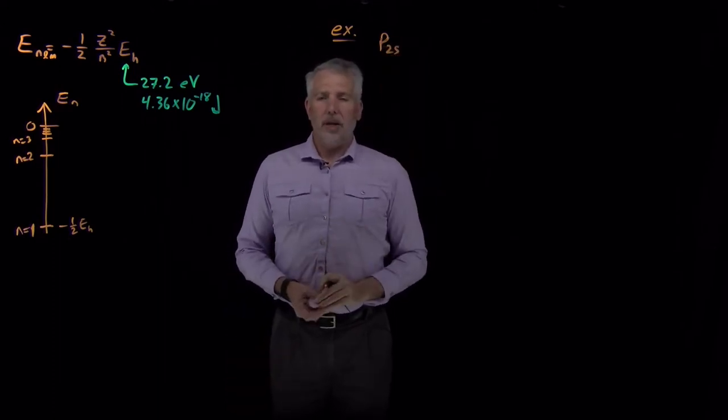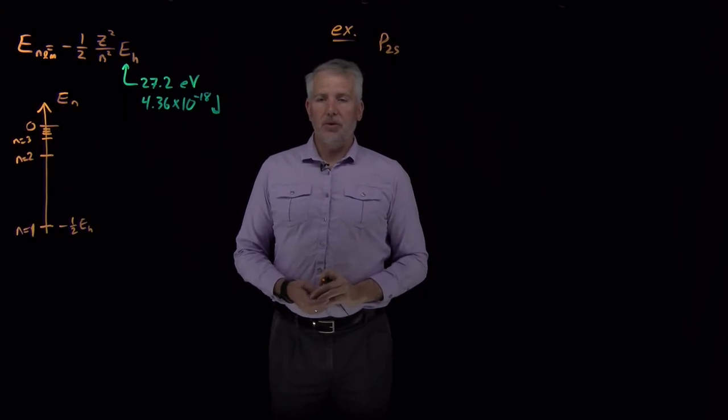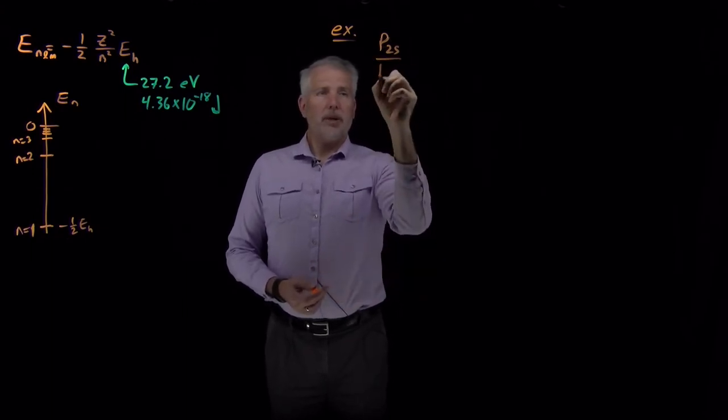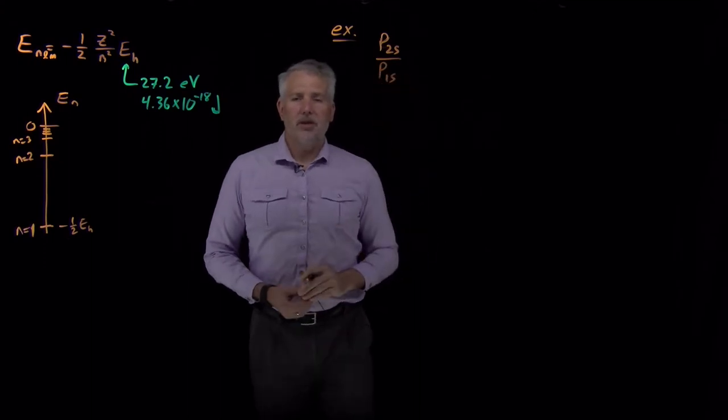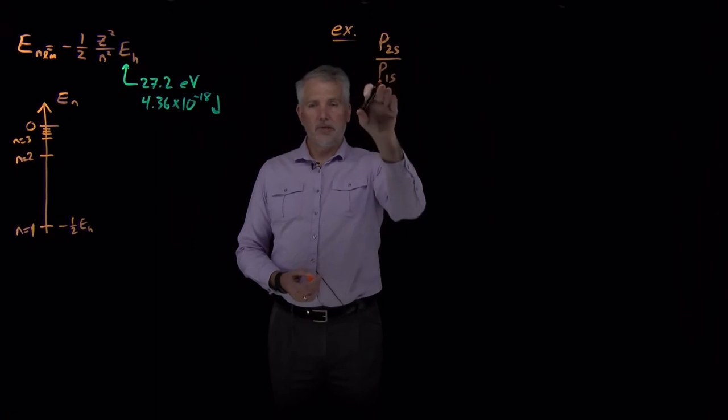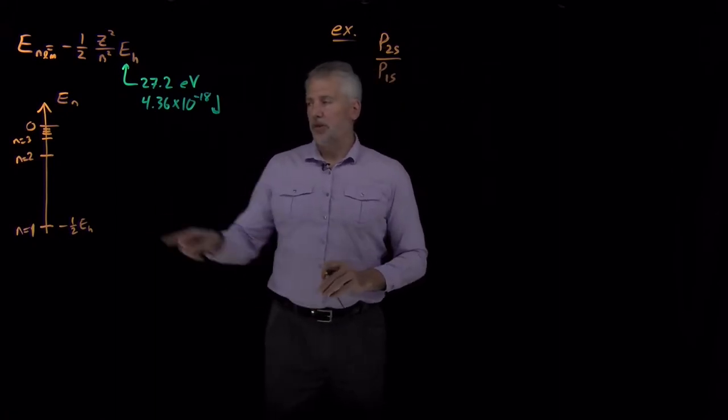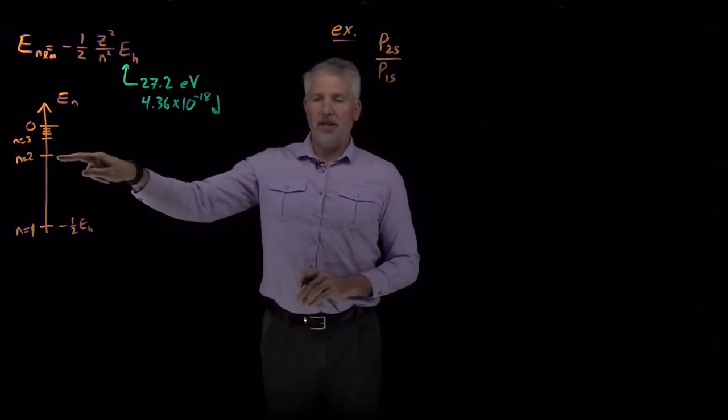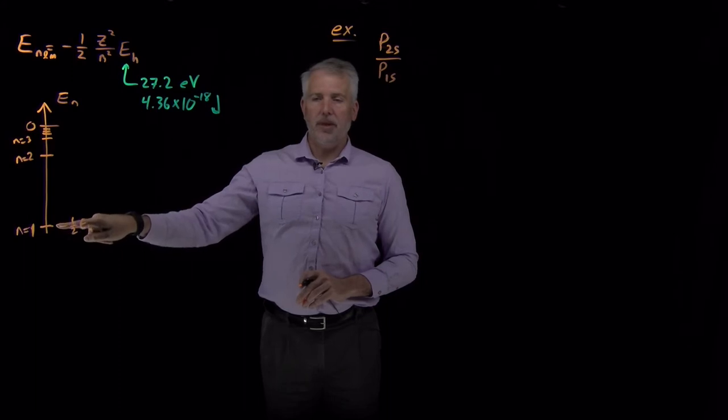So remember, the 2s orbital is the same as the N equals 2 spherical orbital, so the 2,0,0 orbital. And to make things relatively simple, we can say, what's the probability of occupying the 2s wave function relative to the probability of occupying the 1s wave function? What's the probability of being in this excited state relative to the probability of being in this ground state?